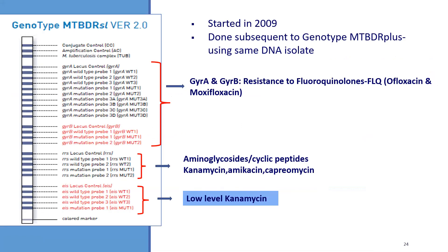Genotype MTBDRsl version 2.0, introduced in 2009, is performed subsequently for second-line resistance. The GyrA gene is the one that causes resistance to fluoroquinolones — ofloxacin and moxifloxacin. GyrA has 3 wild-type probes and multiple mutation probes (1, 2, 3A, 3B, 3C, 3D). GyrB has one wild-type probe and two mutation probes. RRS has two wild-type probes and mutant probes. EIS tells you about low-level kanamycin resistance. This line probe assay detects fluoroquinolone resistance via GyrA and GyrB, and aminoglycoside resistance via RRS and EIS.